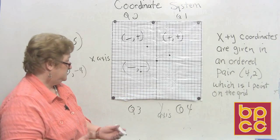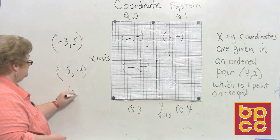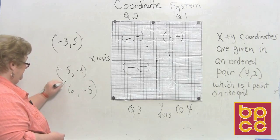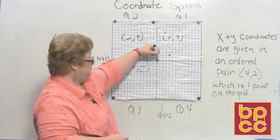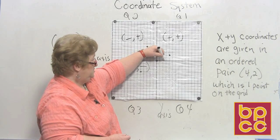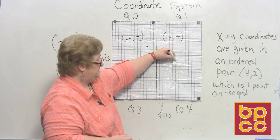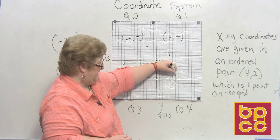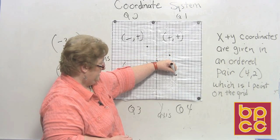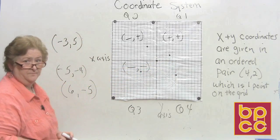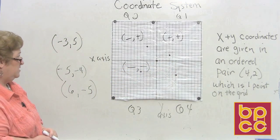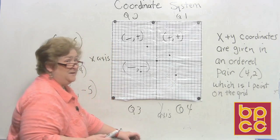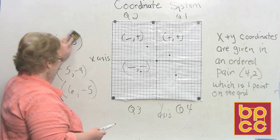In quadrant 4, we go positive on the x and negative (down) on the y. For example, (6, -5): from the origin move over six, then down five, and plot the point. That is in quadrant 4.